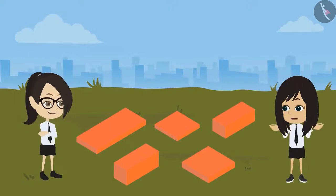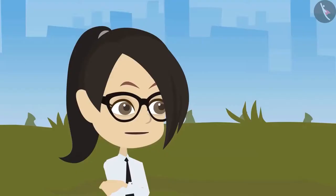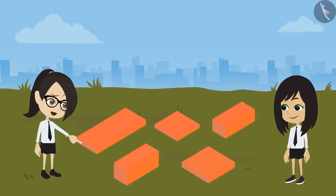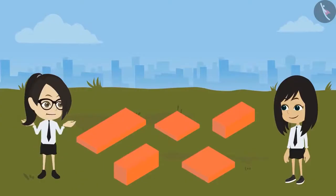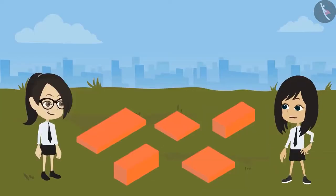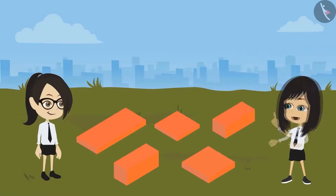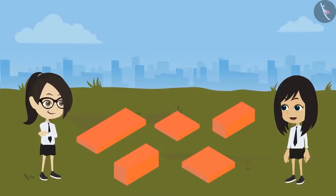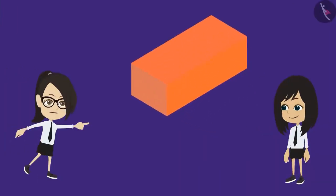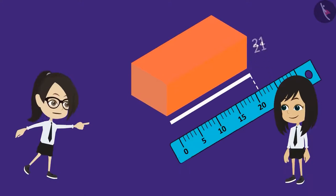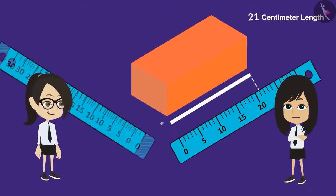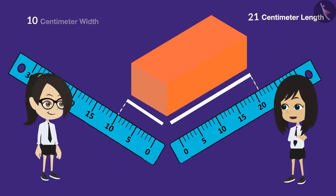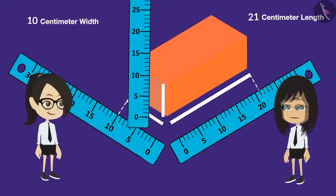Why not we measure the size of all the bricks? Okay, but I have a question. What are we going to measure in these bricks? That's so simple. We will measure the length, width, and the height of these bricks. These three measurements determine the size of a brick. Okay, let's measure them. First, let's measure the length of this brick. The length of this brick is 21 cm, the breadth is 10 cm, and the height is 8 cm.